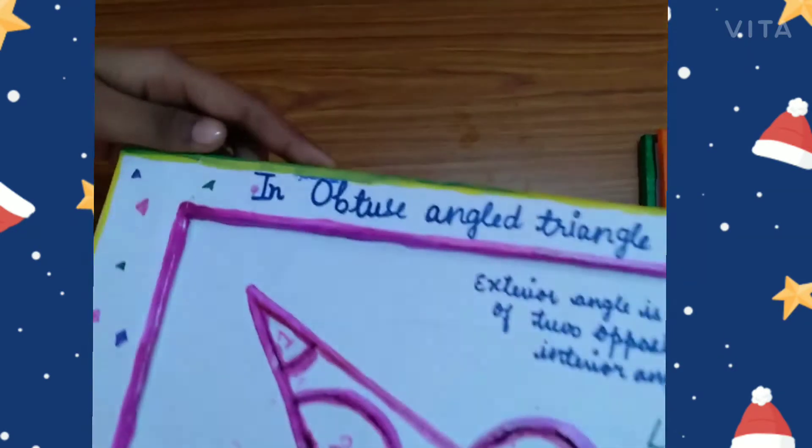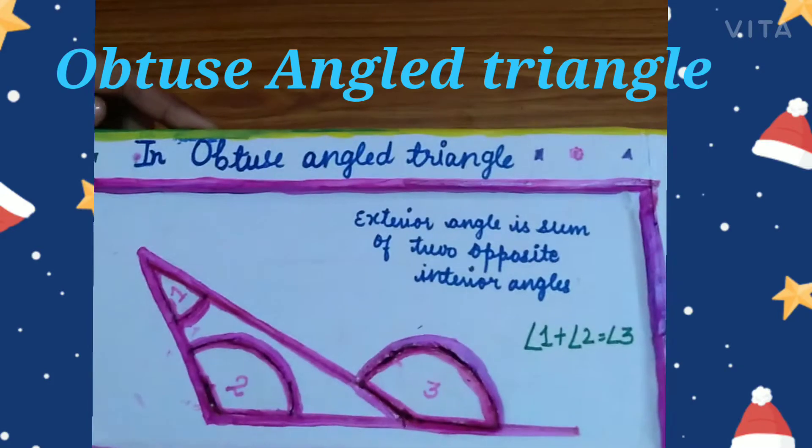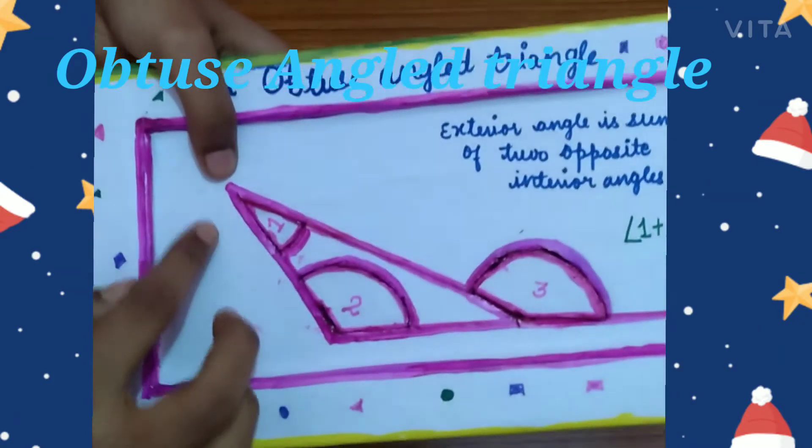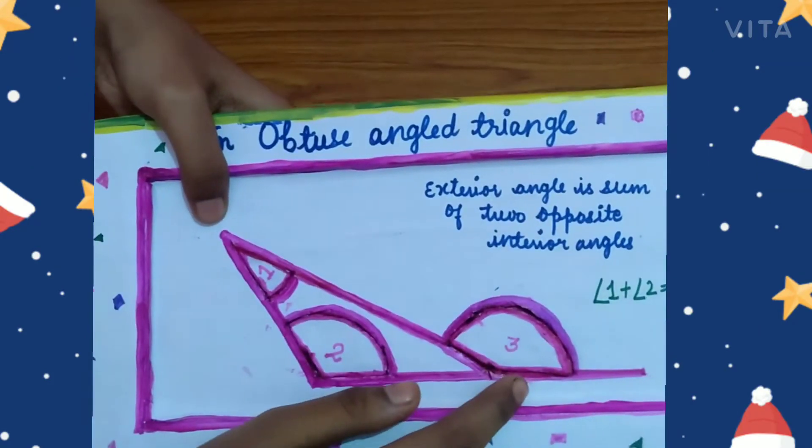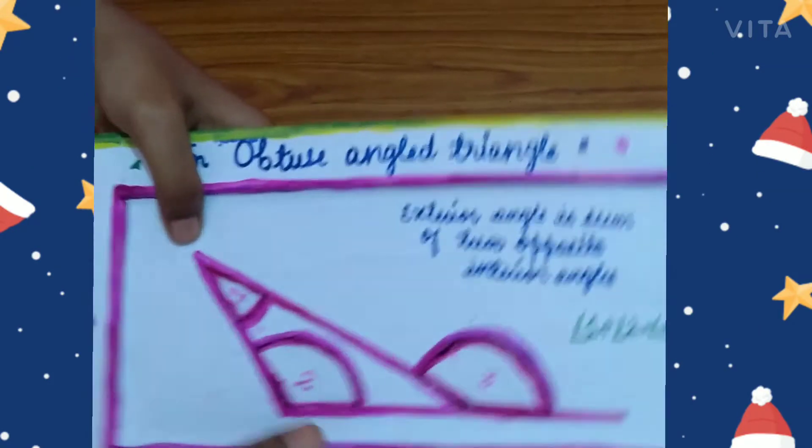In the obtuse triangle, these are interior angles and this is the exterior angle.